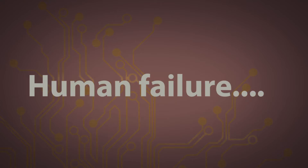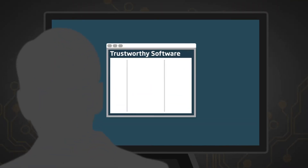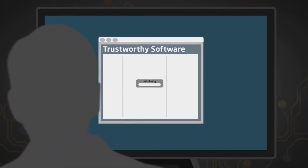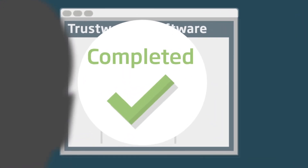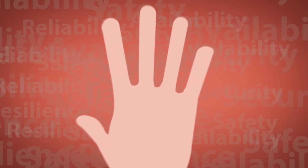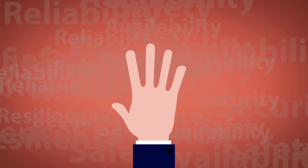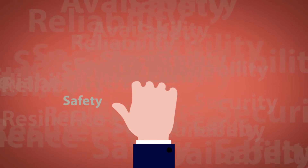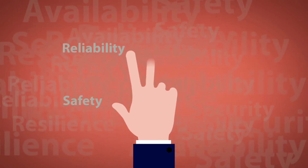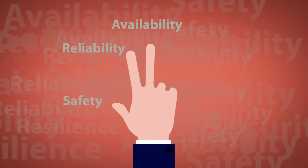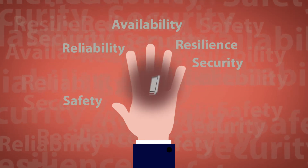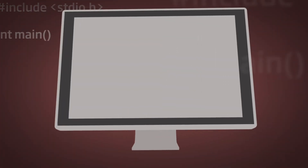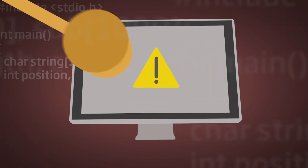Software failures are the result of human failure, which is why we need trustworthy software — software that does what it's supposed to do when it's supposed to do it. Trustworthiness has five facets: safety, reliability, availability, resilience, and security.